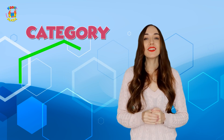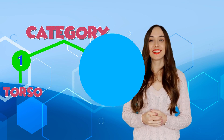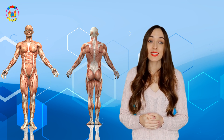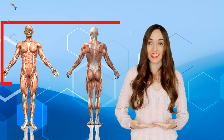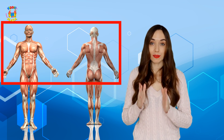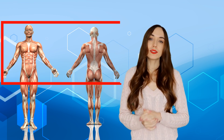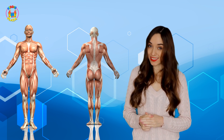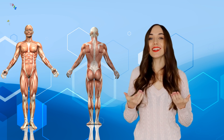Category number one: torso. It extends from the head to the waist. It is the most important part of the body. Do you know what parts of the body are located in the torso? Let's learn them.